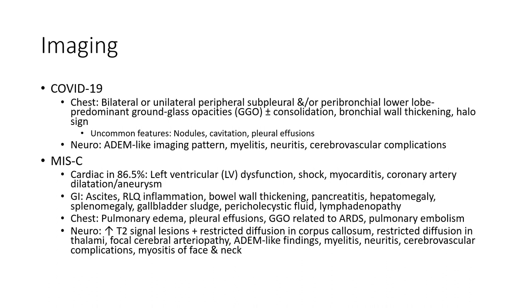MIS-C imaging findings include: biventricular dysfunction, shock, myocarditis, coronary artery dilatation, aneurysm, ascites, right lower quadrant inflammation, bowel thickening, pancreatitis, hepatomegaly, splenomegaly, gallbladder wall thickening, pericholecystic fluid, and lymphadenopathy.